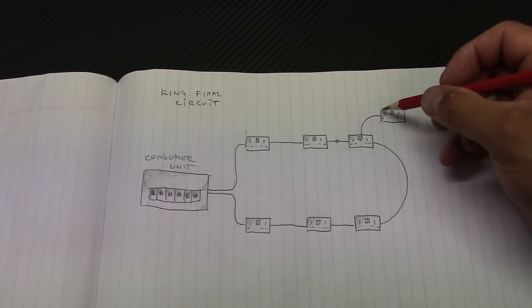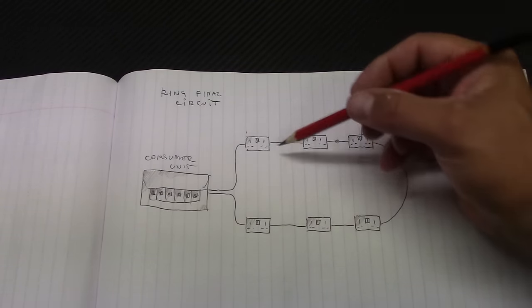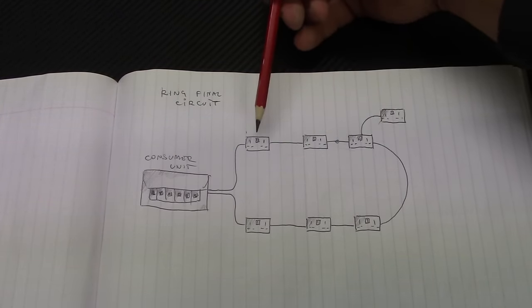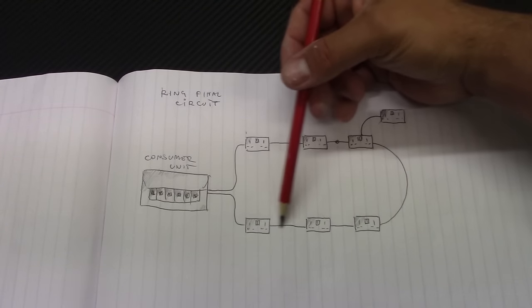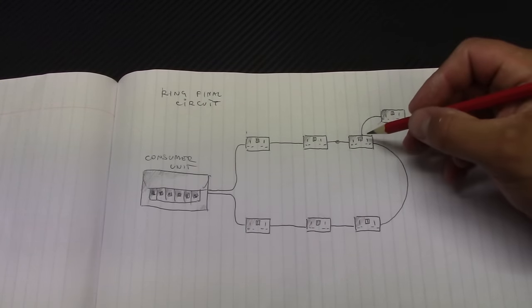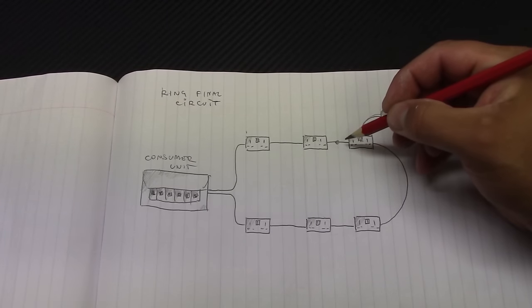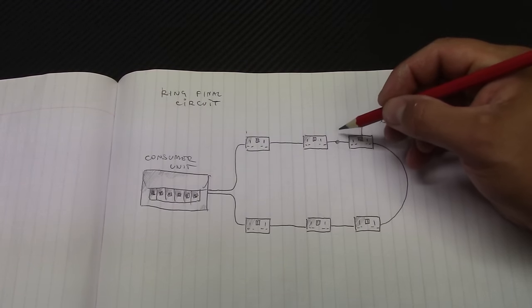The number of spares, unfused spares, is limited by the number of the sockets on the ring. So in this ring we've got six sockets on the ring. So unfused spare we can have only six. So it doesn't matter if it comes from the socket outlet or from the junction box on the cable.